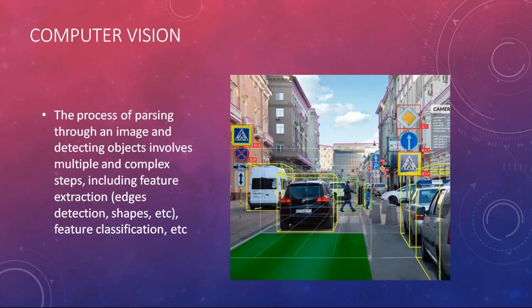So what is computer vision? The aim of computer vision is to see objects and detect them through multiple and complex steps. We need to extract features — for example, what are the edges, what are the shapes — and we need to be able to classify them. If we look at this image, we need to classify what are the cars, where are the traffic signs, and who are the humans on this road. This is a classic example for building a self-driving car and detecting objects as we drive along.